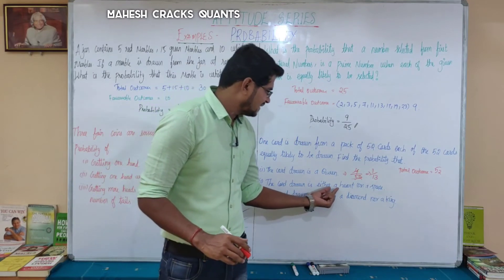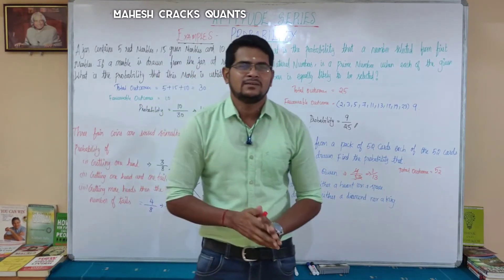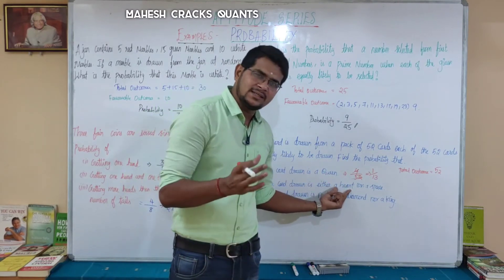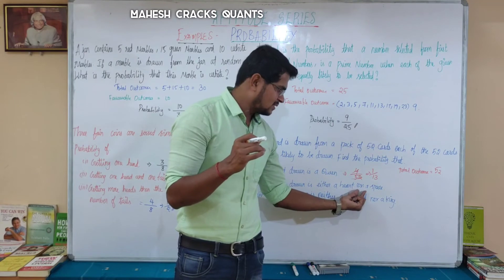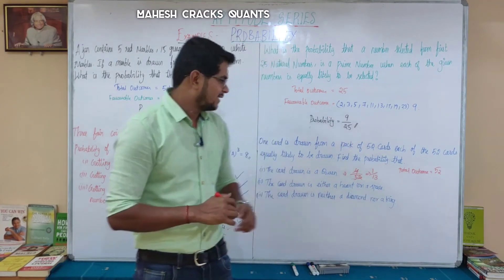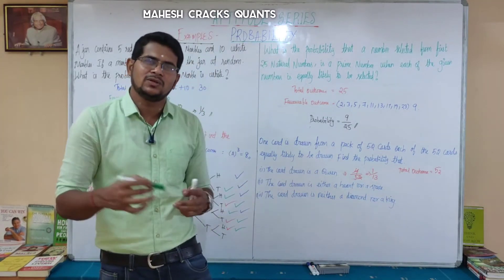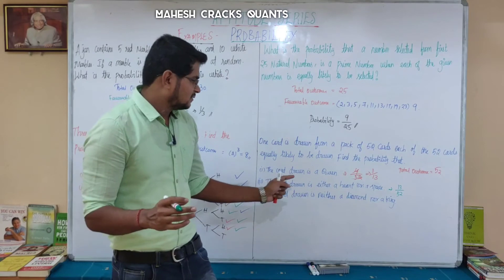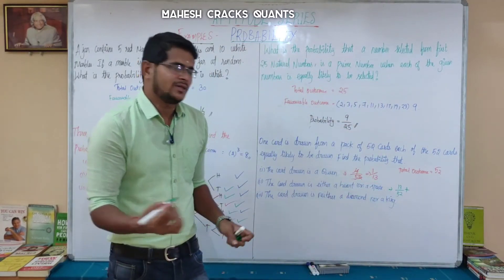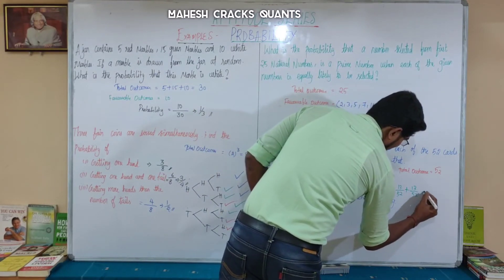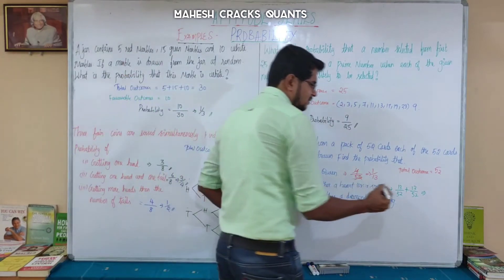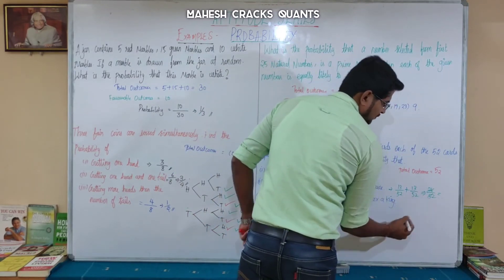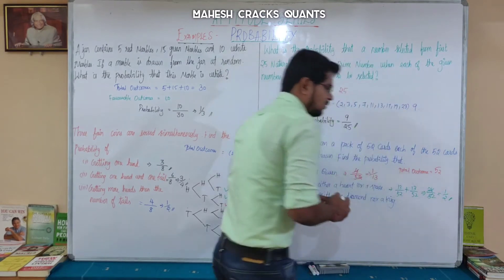Next question: the card drawn is either a heart or a spade. There are 13 hearts and 13 spades. So favorable outcome is 13 plus 13 equals 26. Probability is 26 by 52. Cancel to get 1 by 2. That's the answer.